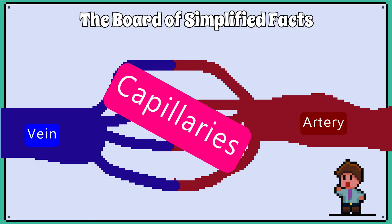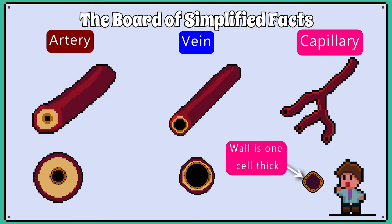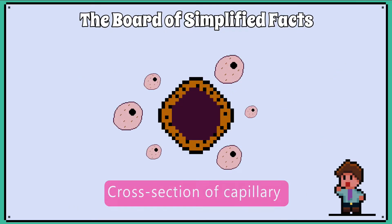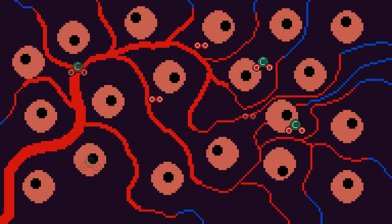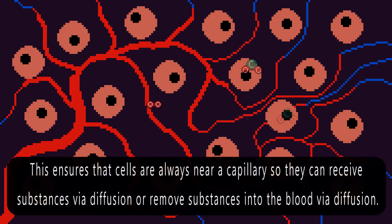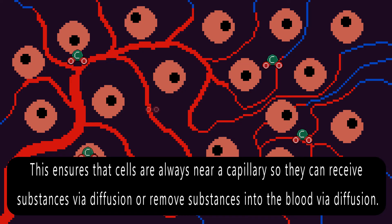Capillaries are the junction between arteries and veins. They have a very small lumen and the wall is made of only one layer of endothelium, so only one cell thick. This is to reduce the diffusion distance between the blood, the cells, and the tissues. Capillaries form an extensive network through the organs and tissues, and this ensures that cells are always near a capillary so they can receive substances via diffusion, or remove substances into the blood via diffusion.